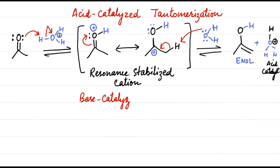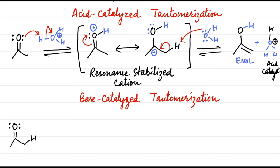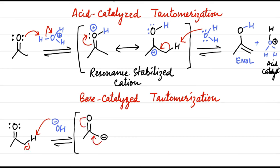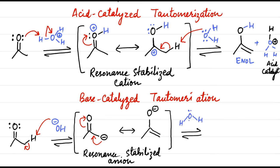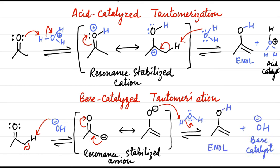In base-catalyzed tautomerization, the carbonyl compound is deprotonated at the alpha position by a base to form a carbanion. This carbanion is quickly resonance-stabilized to an enolate. The enolate is protonated at oxygen to form an enol and regenerate the basic catalyst. Thus, base-catalyzed tautomerization of a carbonyl compound proceeds through an enolate intermediate. Notice that all reagents and intermediates are either neutral or negatively charged — the mechanism does not exhibit any positive charges, consistent with basic conditions.